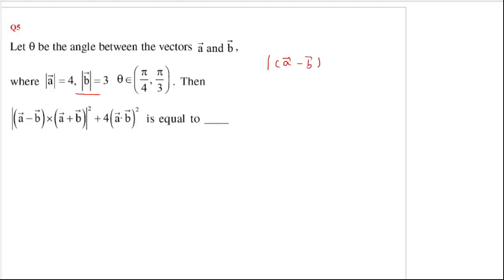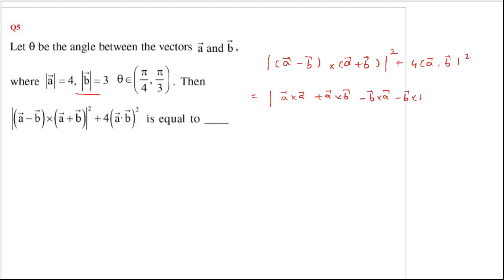We expand (a × b + b × a)² + 4(a·b)². This gives a×a which is zero, plus a×b minus b×a minus b×b which is also zero, plus four a·b — which is four a² b² cos²θ.